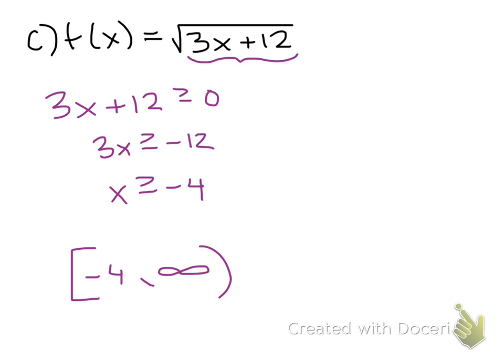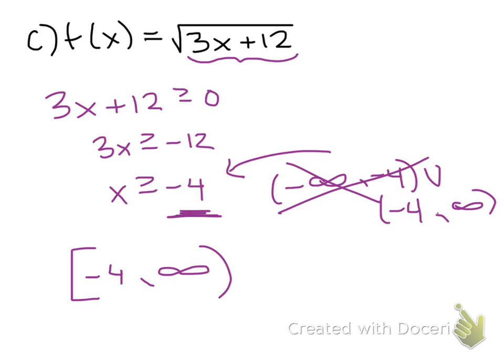So a common mistake is that students will write this as the domain, negative infinity to negative 4, union negative 4 to infinity. However, that conflicts. This is saying that negative 4 is the smallest value you can use. Therefore, that part doesn't make sense. And it also says that it has to be equal to, so that wouldn't make sense. So just make sure you kind of think about your domain when you write it based on the statement that you produced.